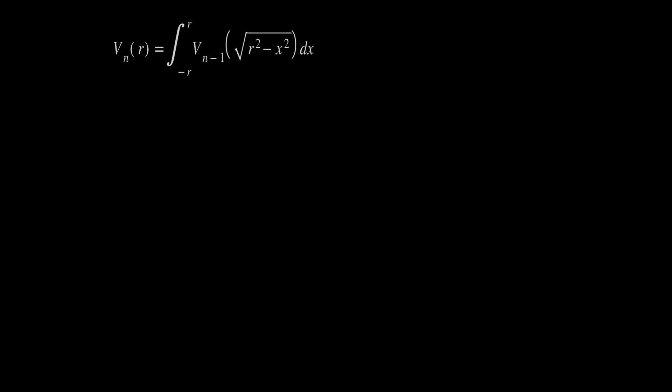In general, the volume of an n-dimensional hypersphere of radius r equals the integral from negative r to r of the volume of spheres of one less dimension, evaluated at all possible radii — square root of r squared minus x squared — times dx. This is the general formula, and we can always factor out r to the n from the integral, multiplying it by the hyper-volume of the unit sphere in that dimension. That is our general formula.